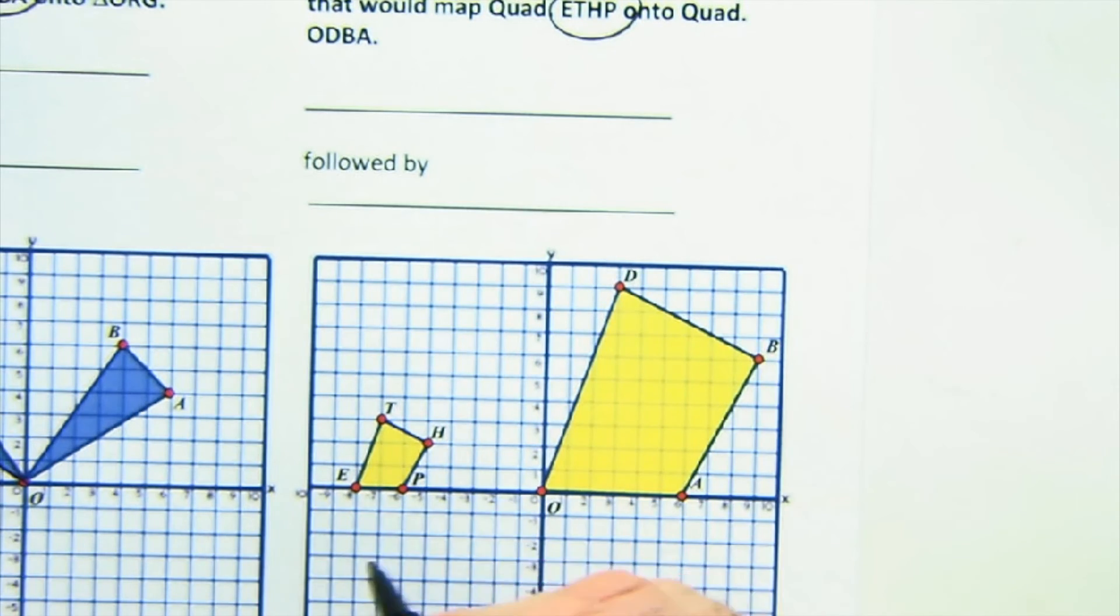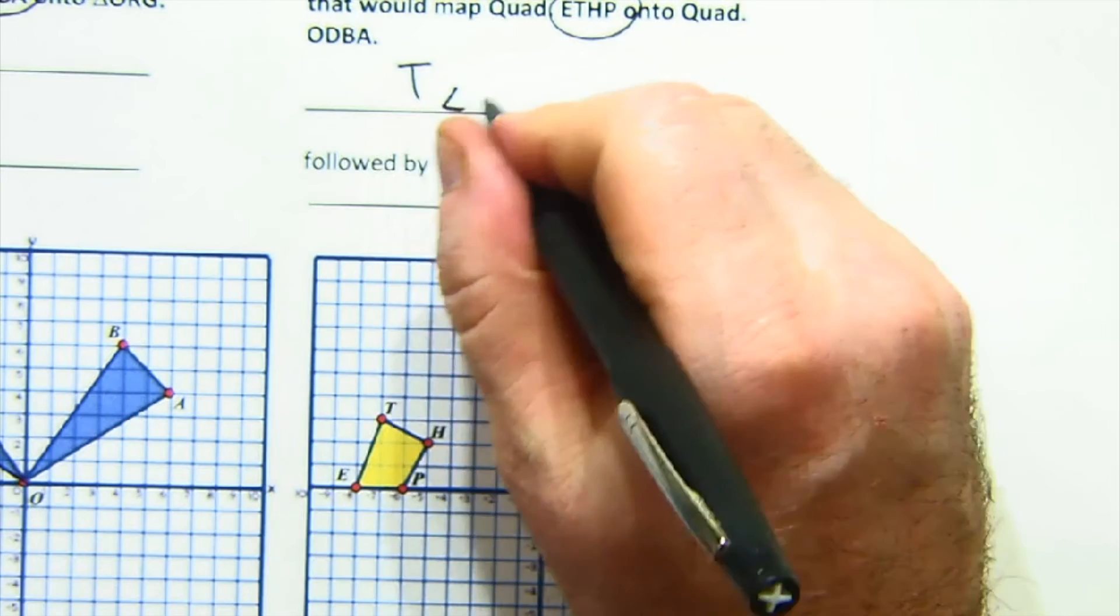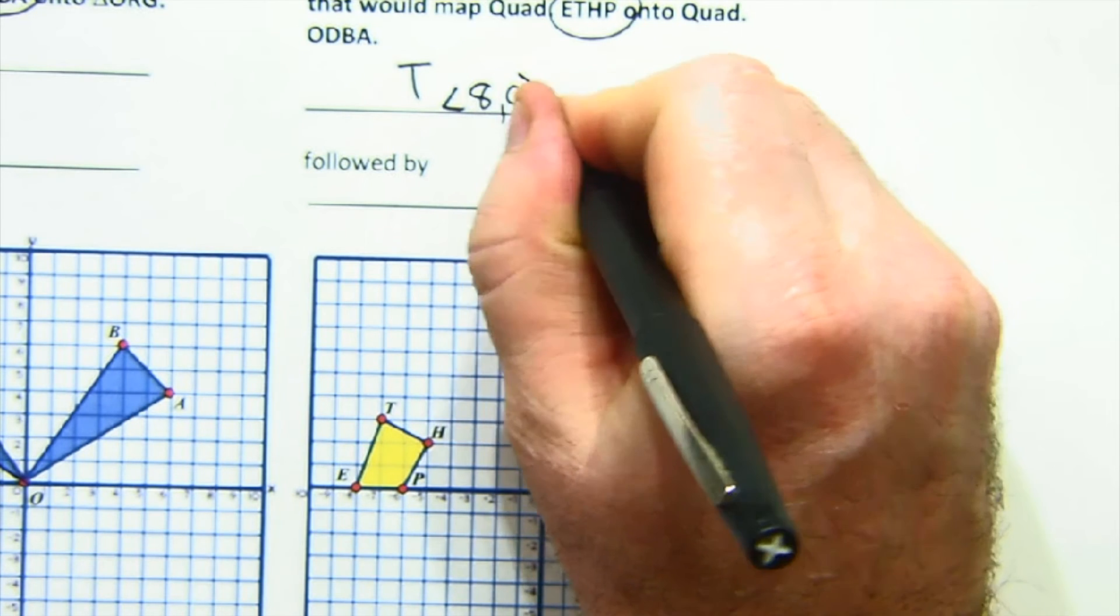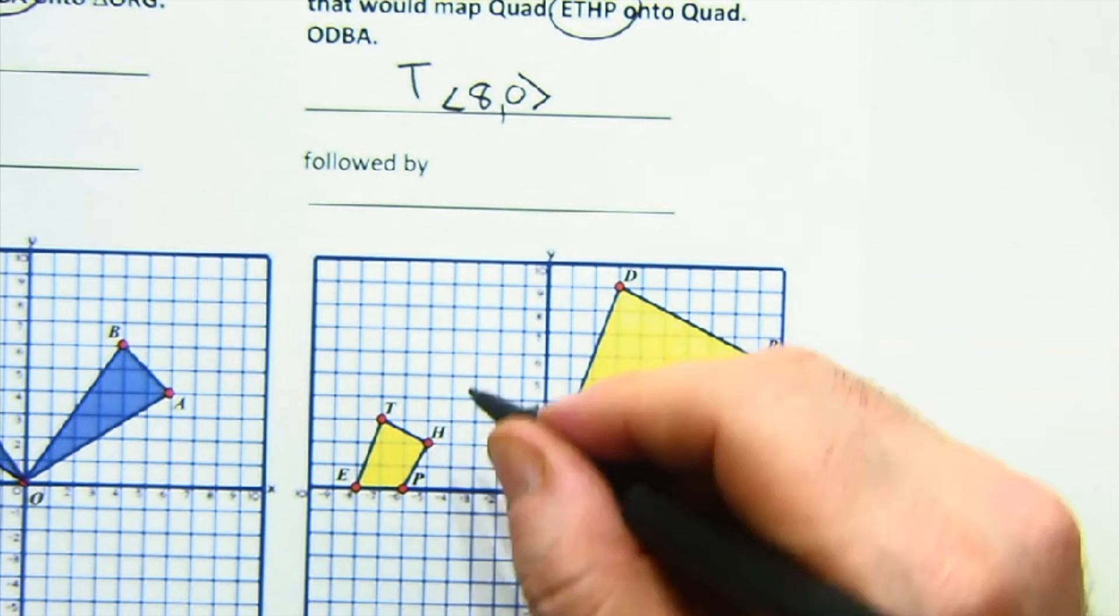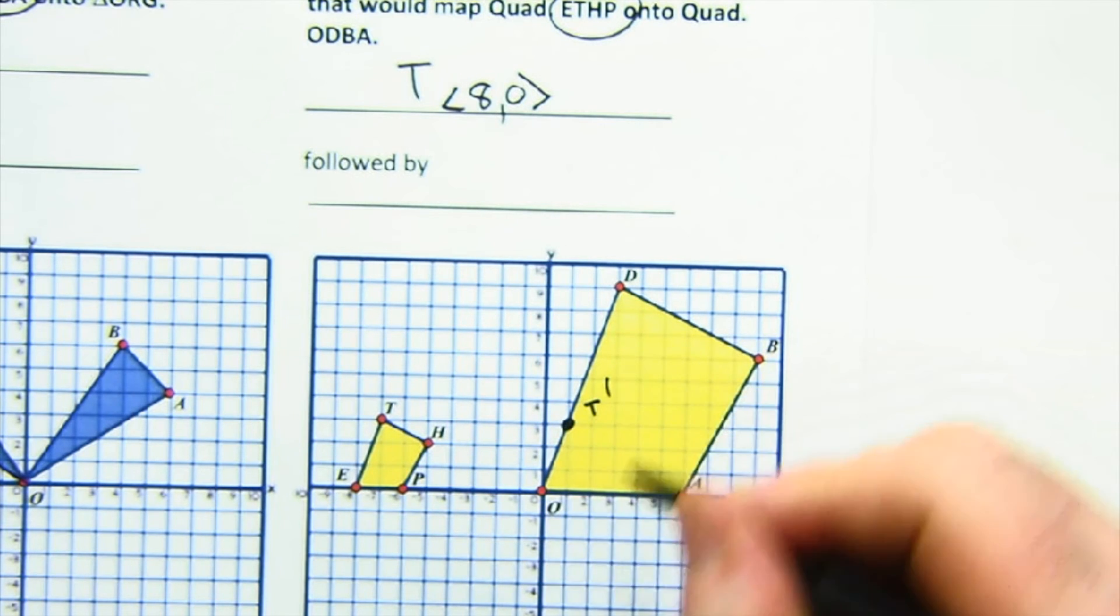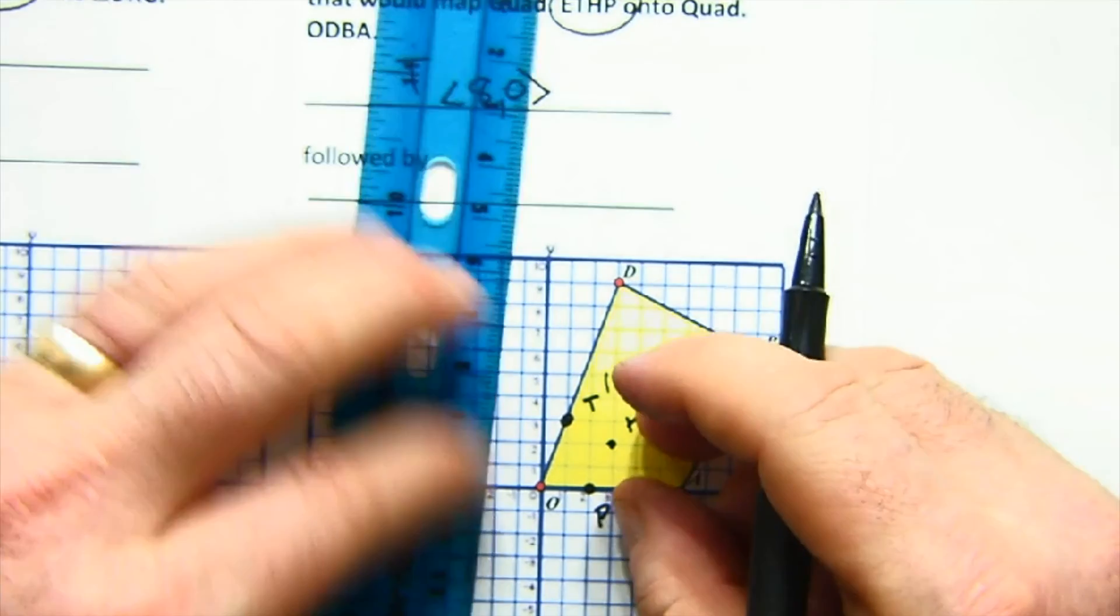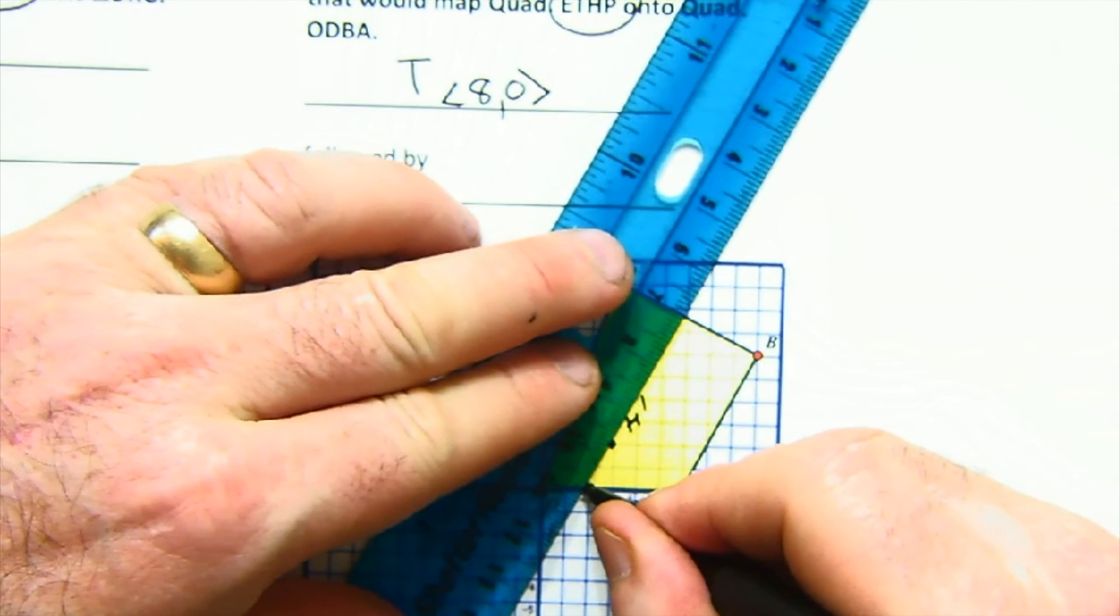So I'm going to start by a translation. I'm going to translate. It looks like eight to the right. So eight to the right. And that would place this guy right here. It would place this guy right here. I would place this guy right here. There's the new location after I slid it eight over.